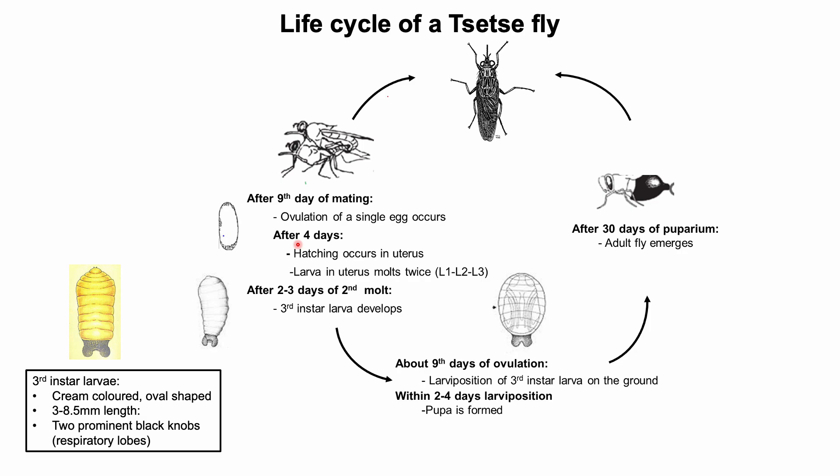After four days the developing larva molts twice within the uterus to reach larval stage three, or third instar. The third instar larva occupies most of the female abdomen and is about equal in weight to the rest of the female's body. Still, the female fly continues to feed, but progressively in smaller amounts. About the ninth day of ovulation, the fully developed third instar larva is deposited on the ground by the female. A well-nourished female will deposit third instar larvae at every seven to eleven days, depending on the ambient temperature.